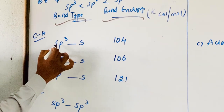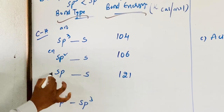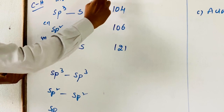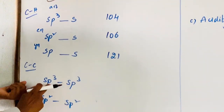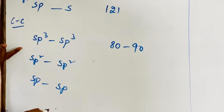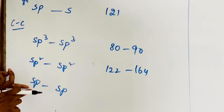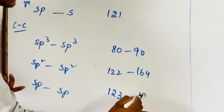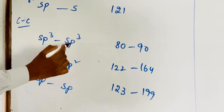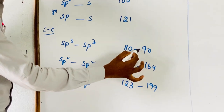The best examples: sp3 carbon in alkane, sp2 in alkene, and sp in alkyne with respect to the hydrogen atom. For the C-C bond energies: sp3–sp3 gives 80 to 90 kcal/mol, sp2–sp2 gives 122 to 164 kcal/mol, and sp–sp gives 123 to 199 kcal/mol. The range of 80 to 90 varies depending upon the type of carbon and the surrounding atoms.